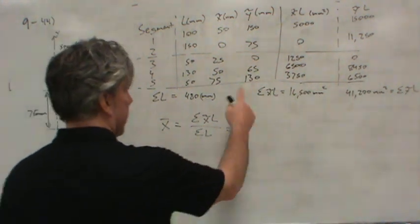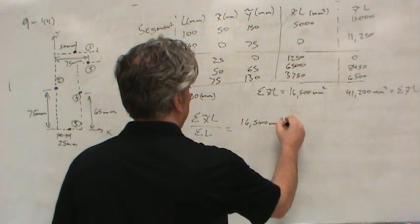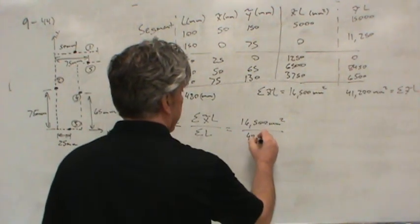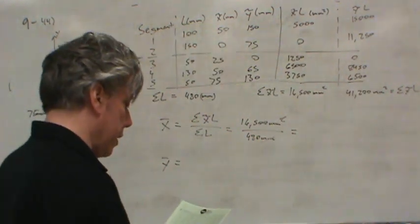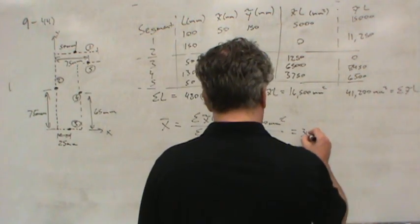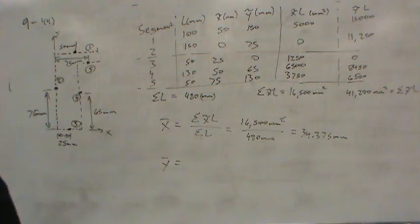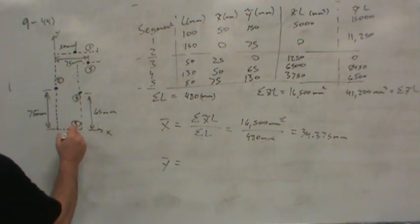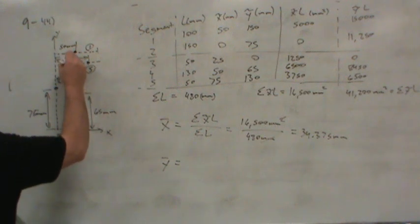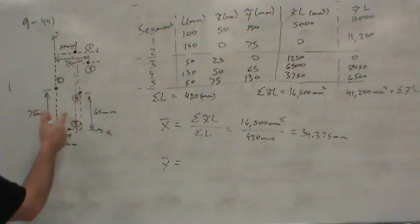And so x-tilde L's, that's right here, 16,500 square millimeters, divided by sum of the L's, 480 millimeters. And so that comes out to 34.375 millimeters. So the centroid is somewhere along this line, assuming I place this line at 34.375 millimeters from the y-axis.